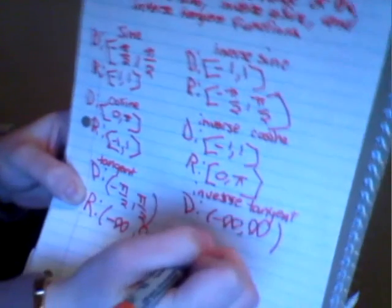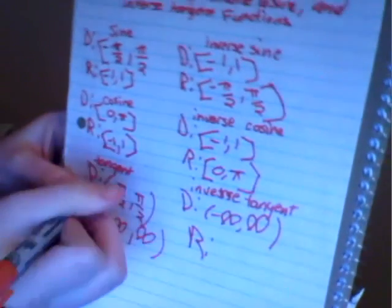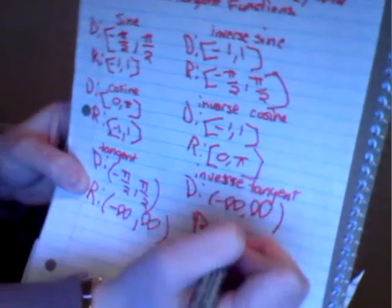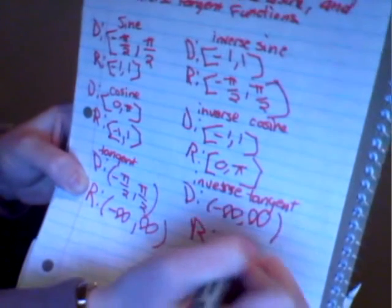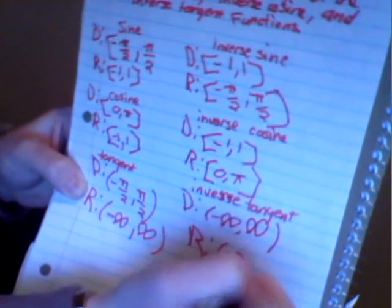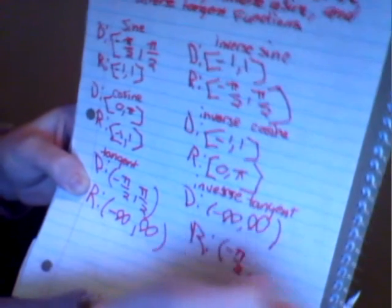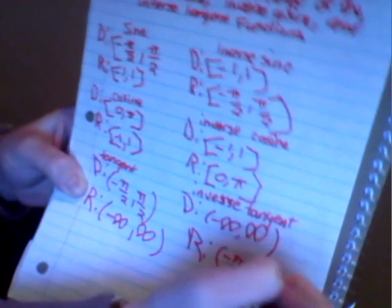And the range of the inverse tangent is going to be what the domain of the tangent was. So it's going to be negative pi over 2 to pi over 2.